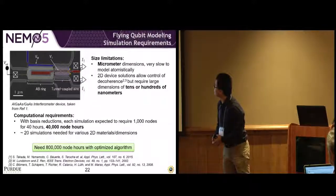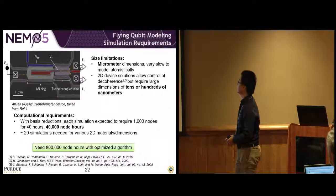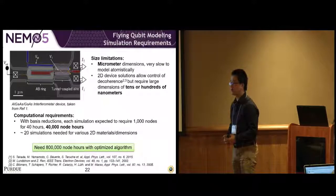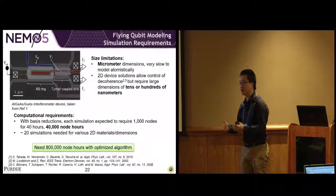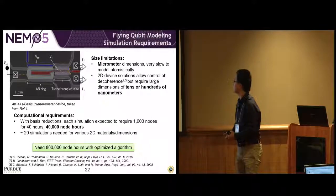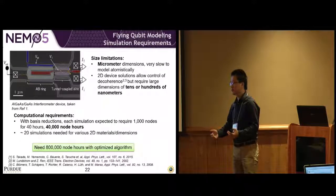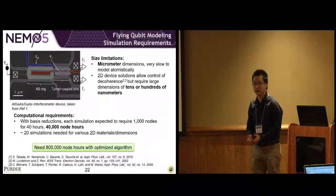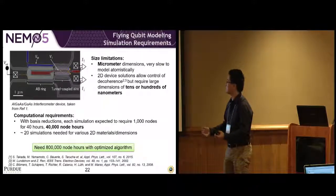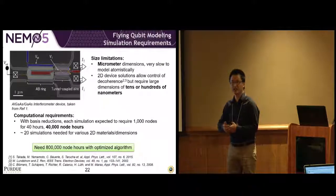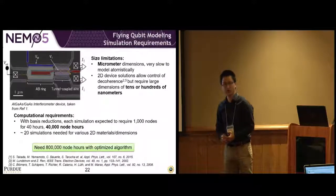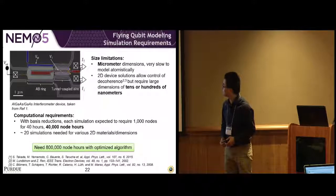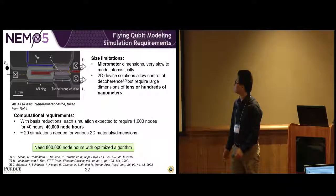This picture shows an experimental device that's on the order of micrometers. It's very large to simulate atomistically. In our simulations, we actually use 2D devices that are smaller, but still large for atomistic simulation—on the order of tens or hundreds of nanometers. With the LRA, the low rank approximation and basis reduction, each simulation still requires about 1,000 nodes for 40 hours. That's 40,000 node hours for one simulation. To get a realistic understanding of this kind of flying qubit, we need at least 20 simulations. In total, 100,000 node hours needed for this research project.